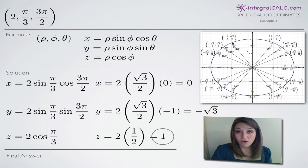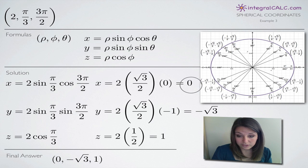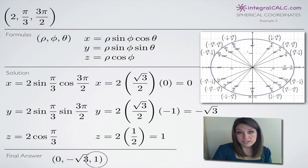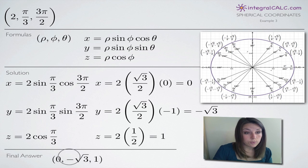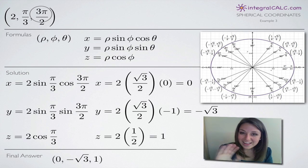That's all we have to do to simplify our equations. Combining x, y, and z, we get (0, negative square root of 3, 1) as our rectangular or Cartesian coordinates, which is exactly equal to the spherical coordinate (2, pi over 3, 3 pi over 2). I hope that helped — see you in the next video!